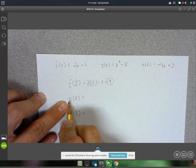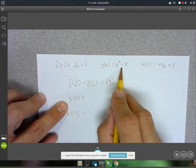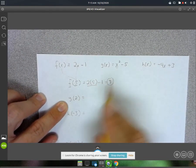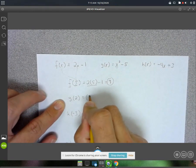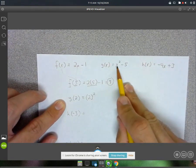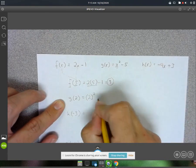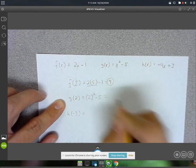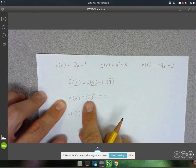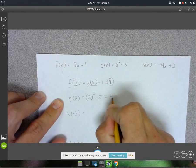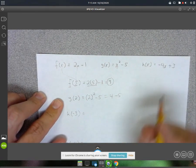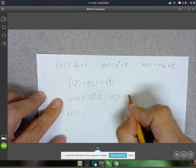Alright, so for g of 2, we're going to go to the g function, and replace that x with a 2. So we've got a 2 squared, and then minus 5. Alright, 2 squared, that's 2 times 2, so 4. And then minus 5 will give us negative 1.